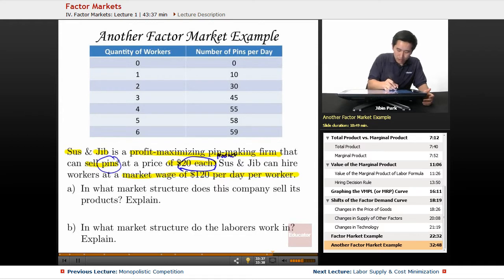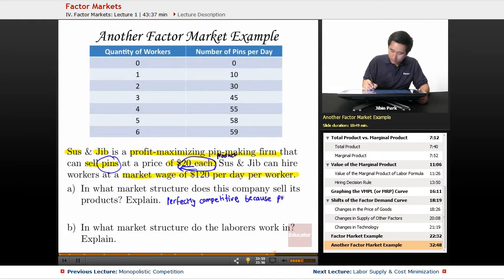The final product is sold in the product market. If you're selling at $20 each, then it's perfectly competitive. How do you explain this? Perfectly competitive because price is the same—you're selling at the same price with no differentiation.